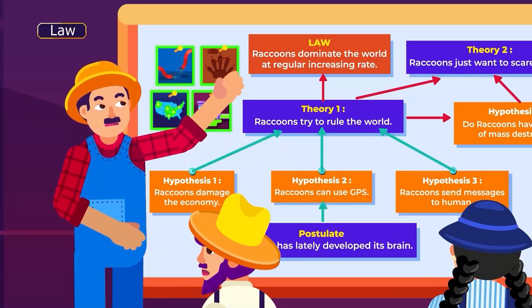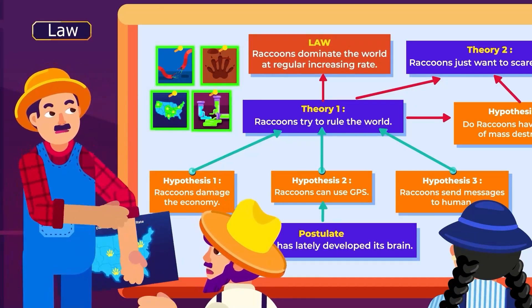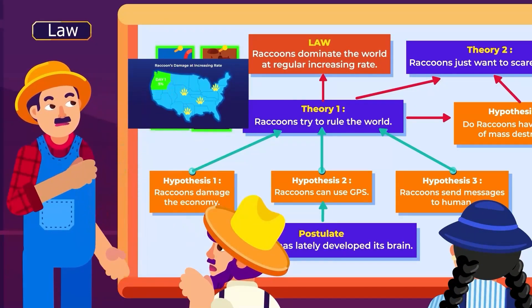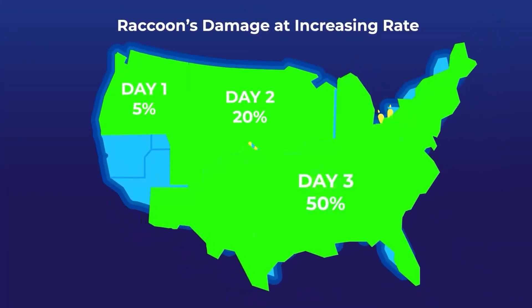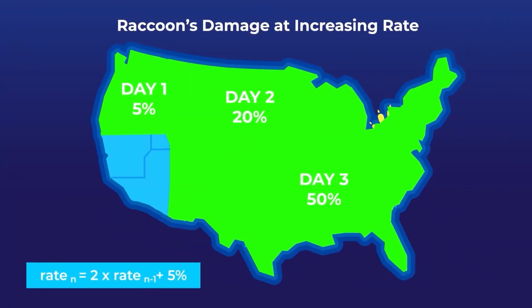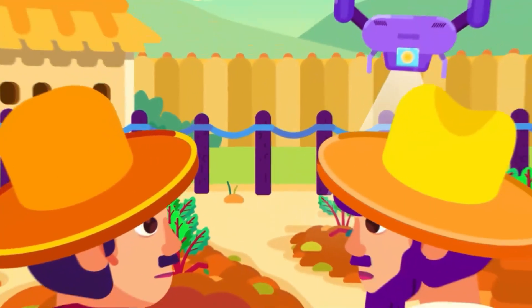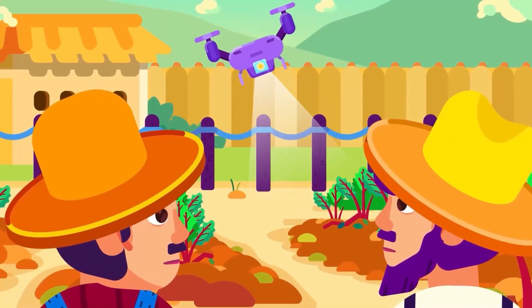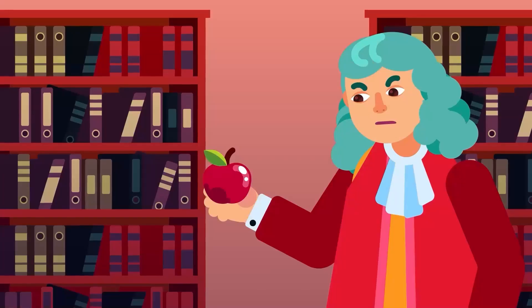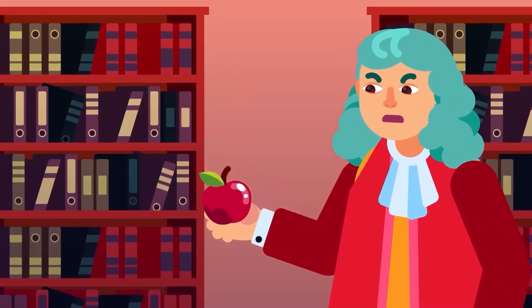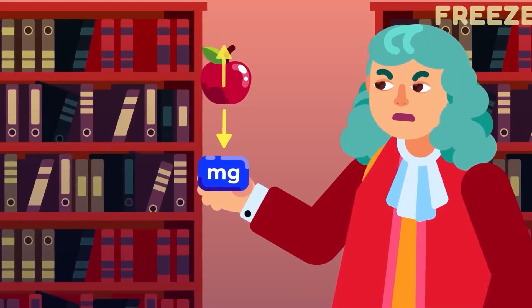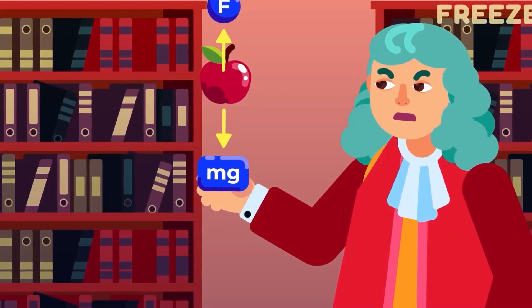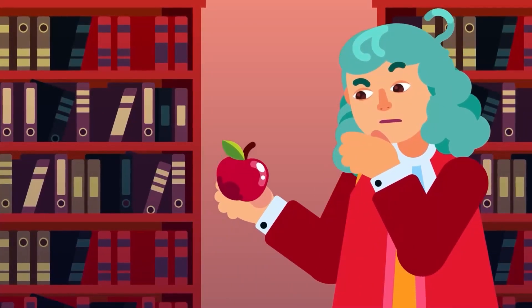Another scientific term is law. A law, or rule or principle, summarises the inexplicable regularity or pattern of a specific phenomenon, often simplified in equations based on observations or empirical evidence. Newton's law of motion, for example, describes the relationship between acceleration, mass and force, but cannot explain why that happens.